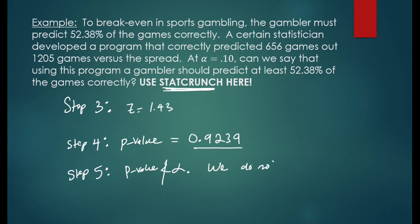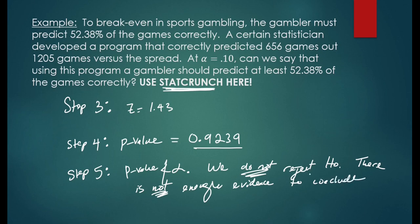The p-value is not less than alpha. So we do not reject the null hypothesis. There is not enough evidence to conclude. And remember, our conclusion is always in terms of the alternative hypothesis.